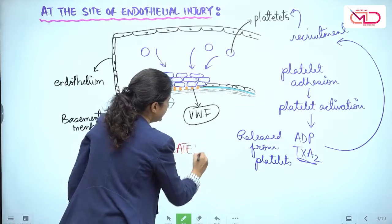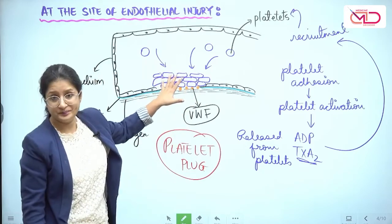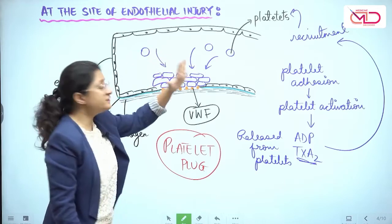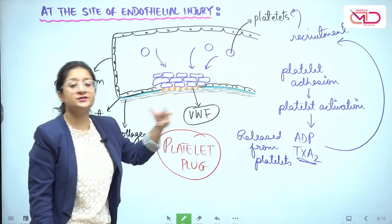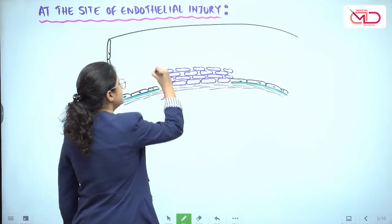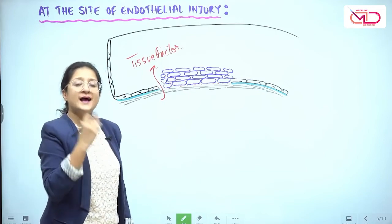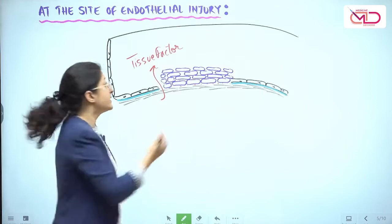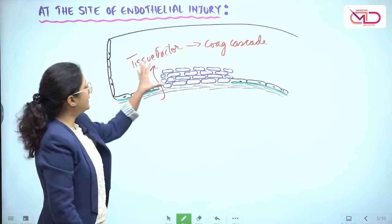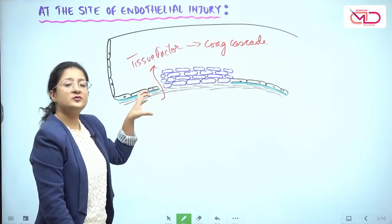The injury has been sealed by the platelet plug, but this is not a cemented wall — it is only a stack of bricks laid on top of one another. It needs further strength; a layer of cement has to be laid down. Now the coagulation system comes into play. A factor called tissue factor is released, which acts as a procoagulant, meaning it initiates the coagulation cascade.